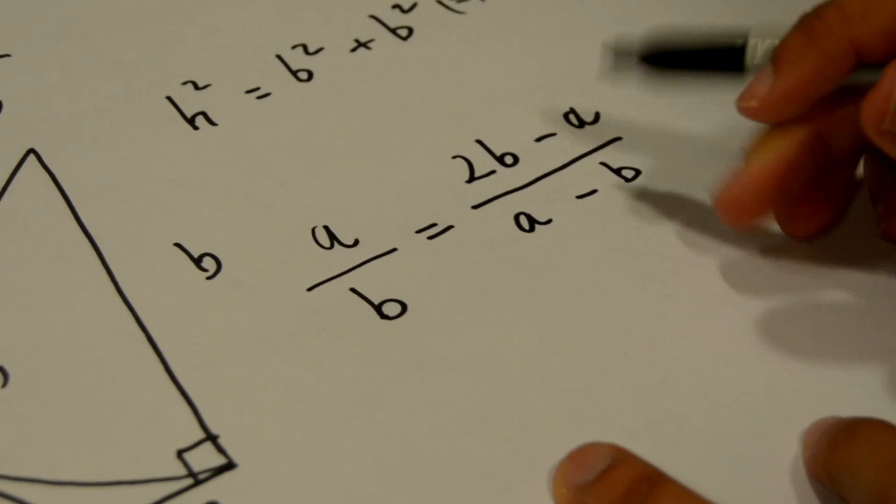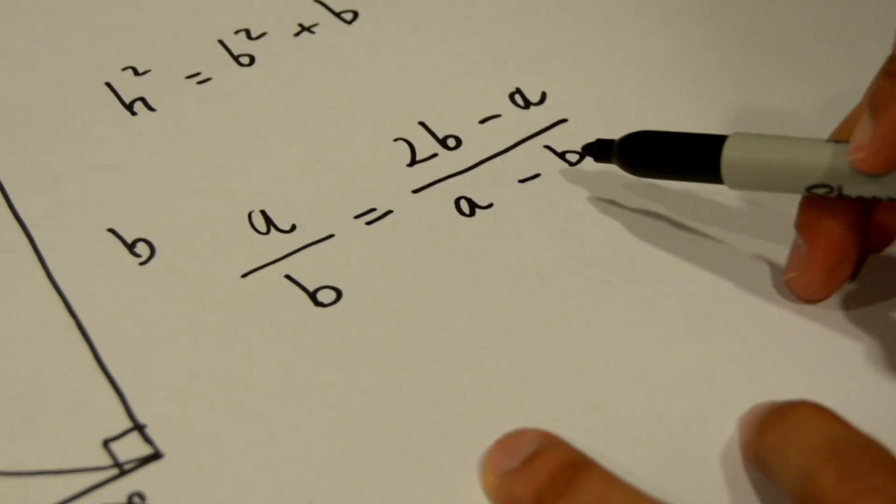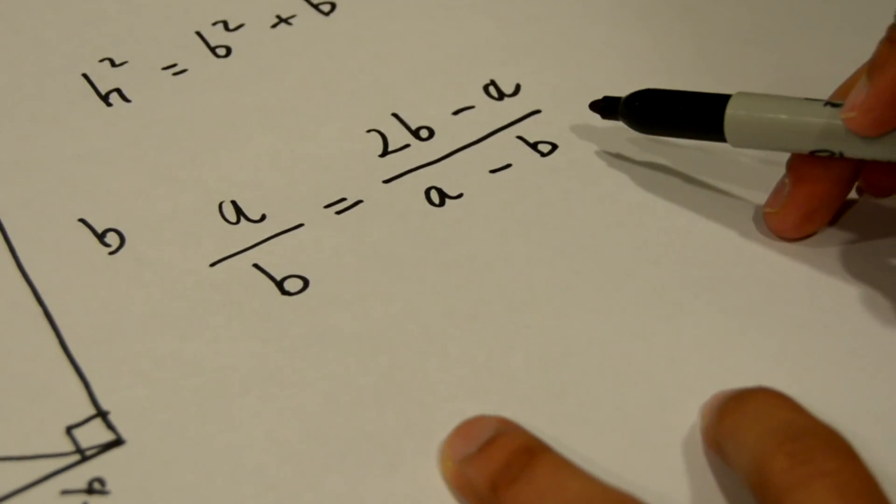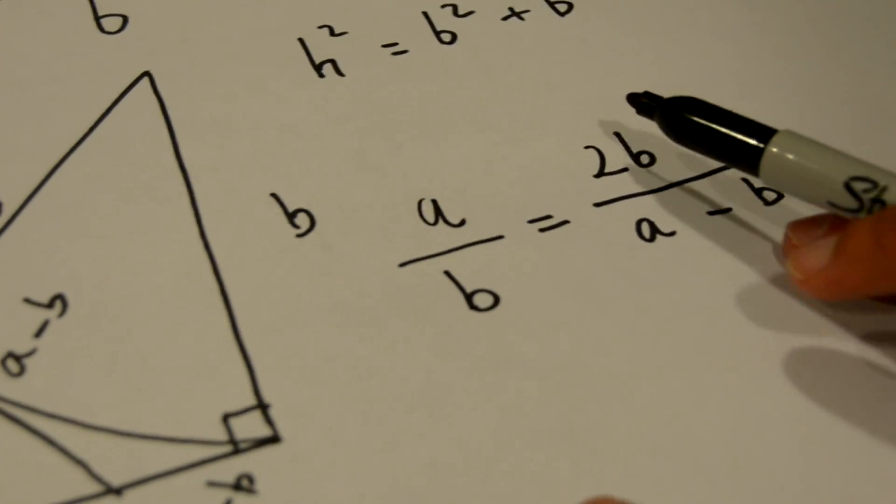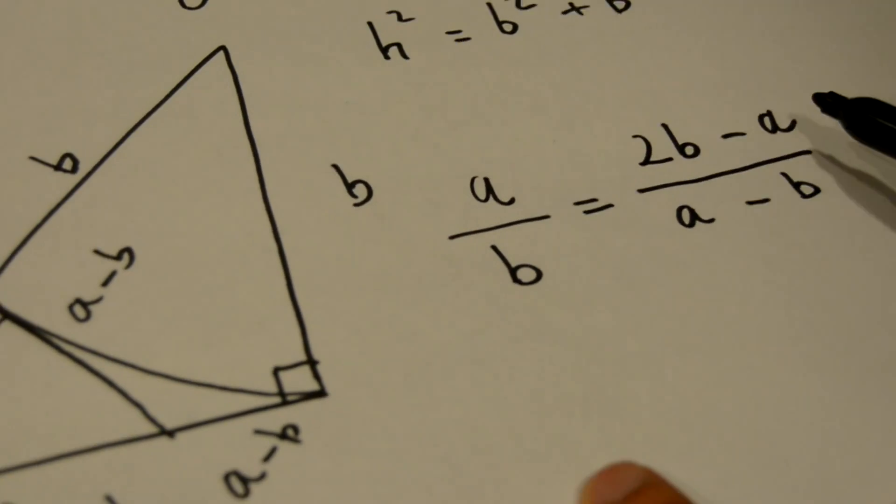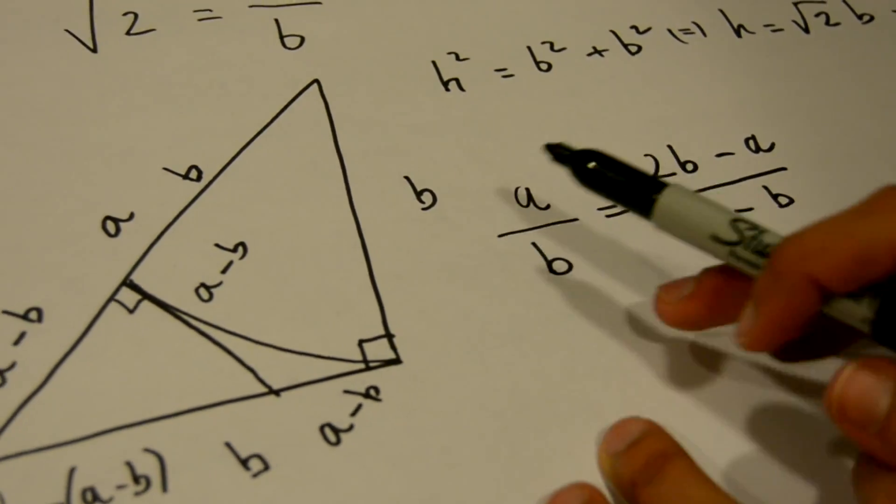Now, these results - 2b minus a and a minus b - are integers as we saw before, and they are also smaller than a and b, as we can see here.